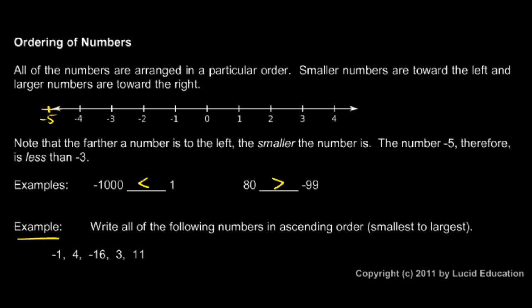And in this example, we're told to write all of the following numbers in ascending order, and that means smallest to largest, ascending, getting greater. So we pick the smallest number first, and that'll be negative sixteen.